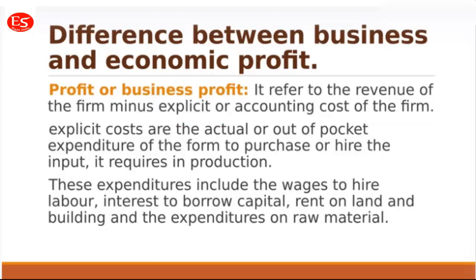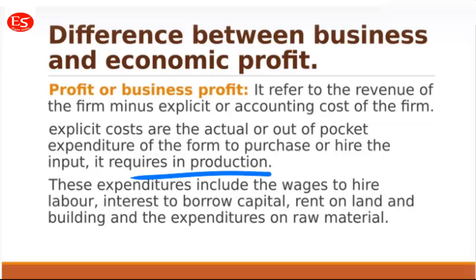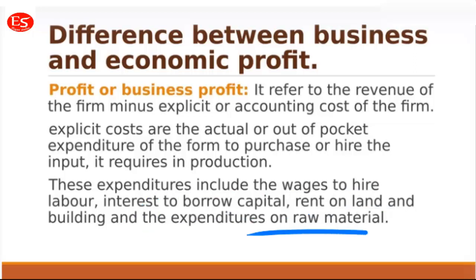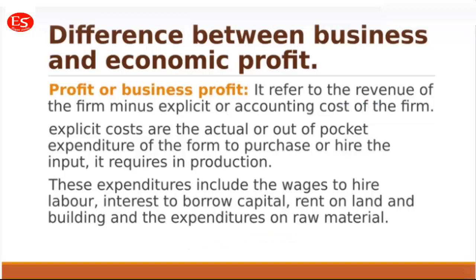Explicit cost is the actual cost which the owner or entrepreneur pays out of pocket — the expenditure to purchase or hire inputs of production. This includes wages to hire labour, interest to borrow capital, rent for land and buildings, and expenditure on raw materials. The cost paid for land, labour, capital, and raw materials is included in explicit cost.